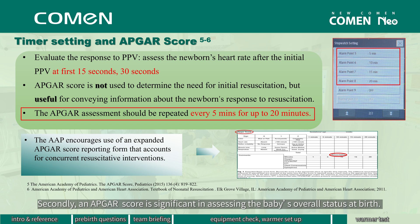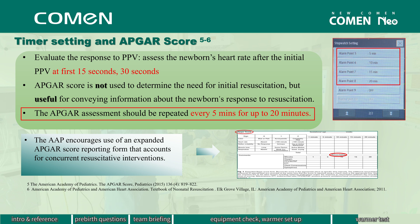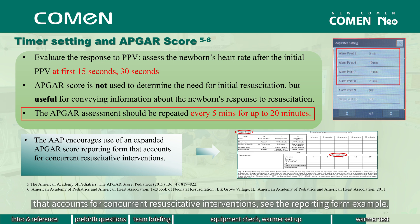An APGAR score is significant in assessing the baby's overall status at birth. NRP states that the APGAR score is not used to determine the need for initial resuscitation, but is useful for conveying information about the newborn's response to resuscitation. To correctly describe the baby's condition and provide accurate documentation, the AAP encourages the use of an expanded APGAR score reporting form that accounts for concurrent resuscitative interventions. See the reporting form example.